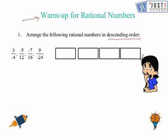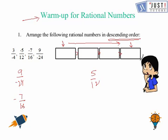So we need to find out the biggest number first and write it in the box, then move to the right hand side with the next smaller number, all the way down to the smallest number. We can write 9/24 here, 7/16 here, 5/12 here, and 3/4 here. As you can see, all the numbers are negative.